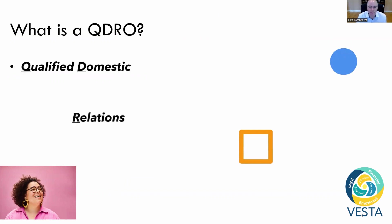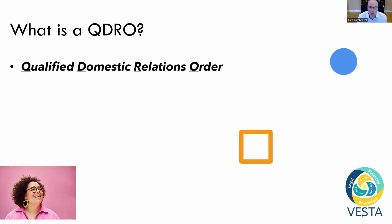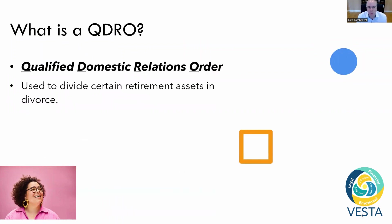What exactly is a QDRO? QDRO is actually an abbreviation for a Qualified Domestic Relations Order. This is a legal document that is produced as part of a divorce. QDROs can be used to facilitate dividing certain retirement assets as part of a divorce.